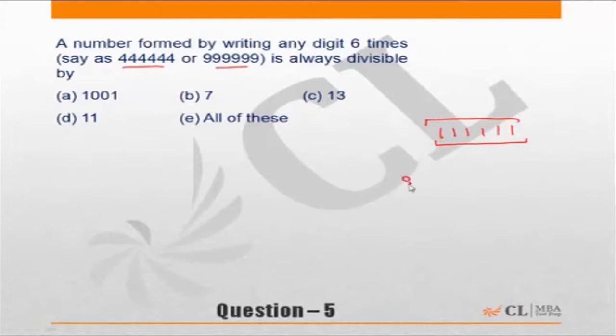Also, it should be visible that 888888 is nothing but 8 into 111111. So if you can find the solution for the triple run 6 times 1, you should get the solution for each of them.